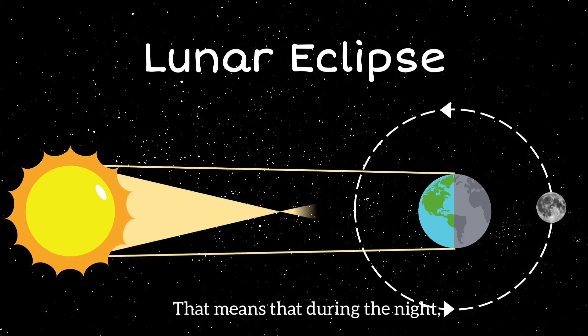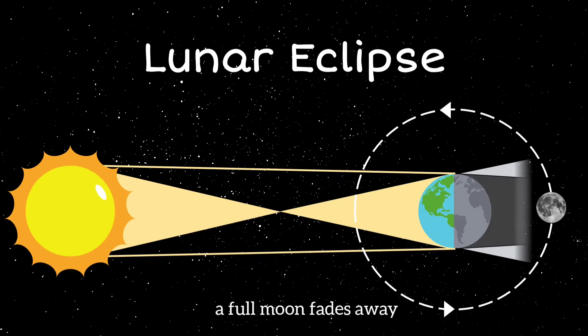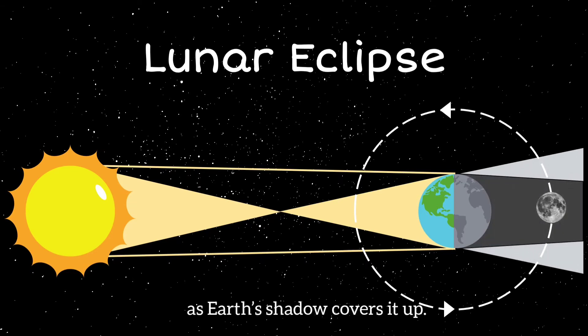That means that during the night, a full moon fades away as Earth's shadow covers it up.